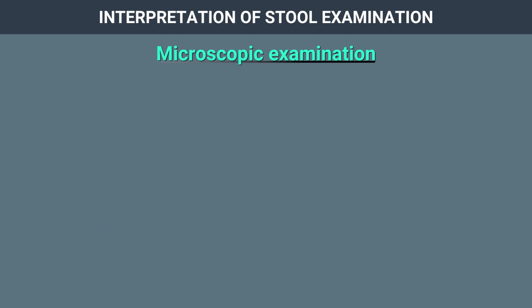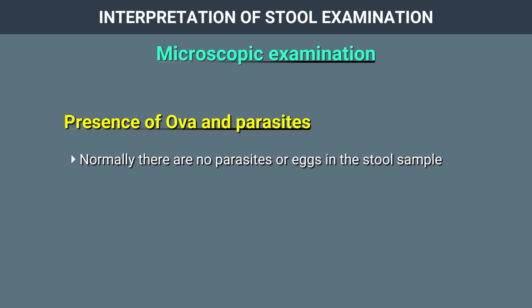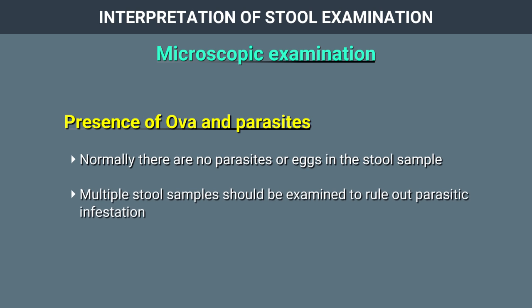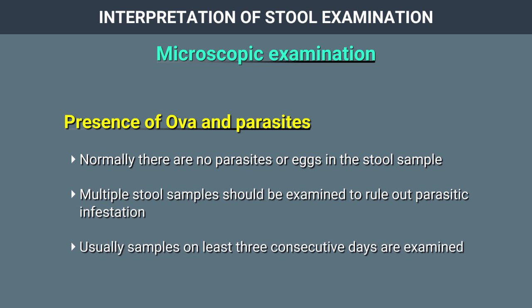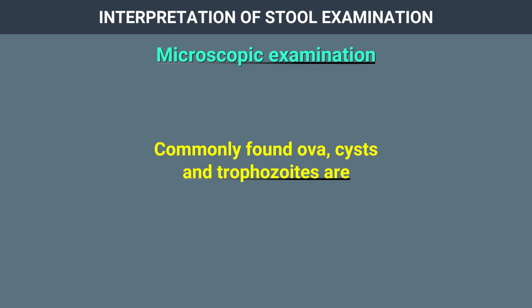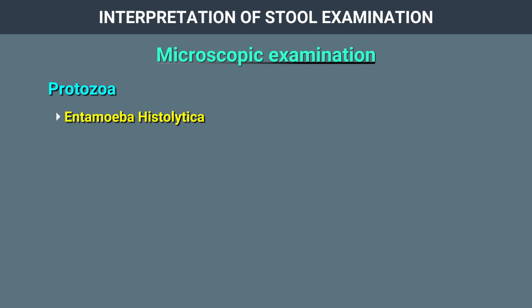Microscopic examination for ova and parasites: normally there are no parasites or eggs in the stool sample. Multiple stool samples should be examined to rule out parasitic infestation; usually samples on at least 3 consecutive days are examined. The commonly found ova, cysts, and trophozoites include Entamoeba histolytica trophozoite.